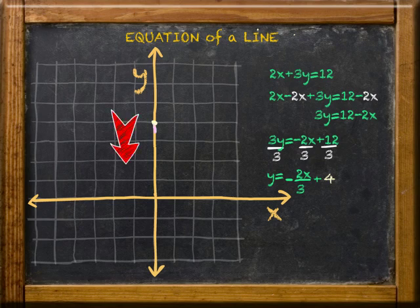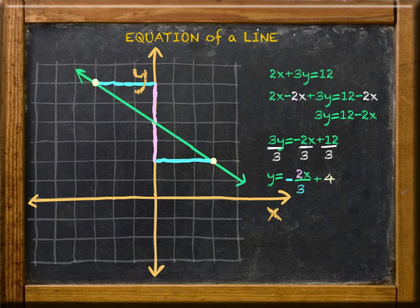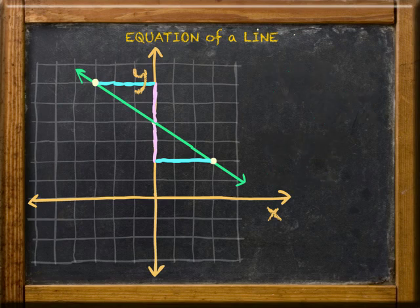So you can either count a rise of negative 2 and a run of plus 3, or you can count a rise of plus 2 and a run of minus 3. Just be sure not to count them both in the negative direction. Plot the new point and connect them. And bingo! You've graphed the equation 2x plus 3y equals 12.